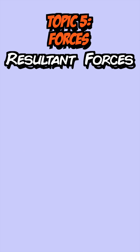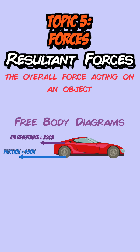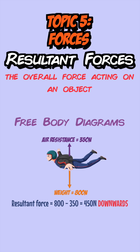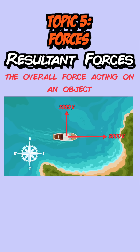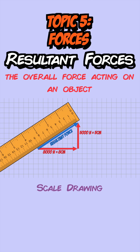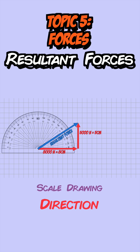The forces on an object can be shown with a free body diagram where each arrow represents a force and the bigger the arrow the bigger the force. Resultant force is the overall force on an object — add forces in the same direction, subtract forces in opposite directions. If forces are at right angles, use a scale drawing: draw the arrows tip to toe, measure the diagonal, convert using the scale, and use a protractor to find the angle.